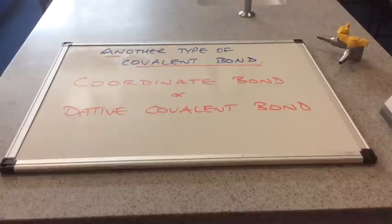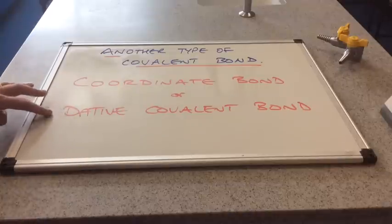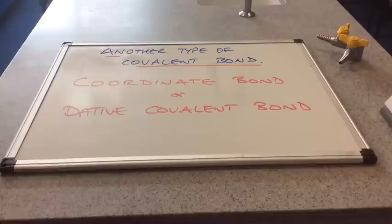This bond has two names. It's sometimes referred to as the coordinate bond or the dative covalent bond. Both of these names refer to this other type of covalent bond.